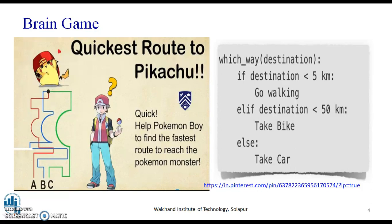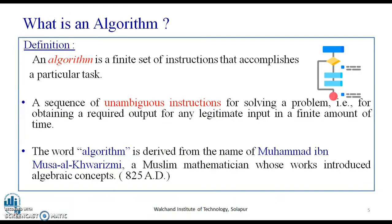We deal with such scenarios on daily basis. Algorithms are everywhere, literally everywhere. What I mean is, there is no escape from algorithm. What are algorithms and why you should care for them? The word algorithm is derived from the name of Muhammad ibn Musa al-Khwarizmi, a Muslim mathematician whose works introduced algebraic concepts in 825 AD.